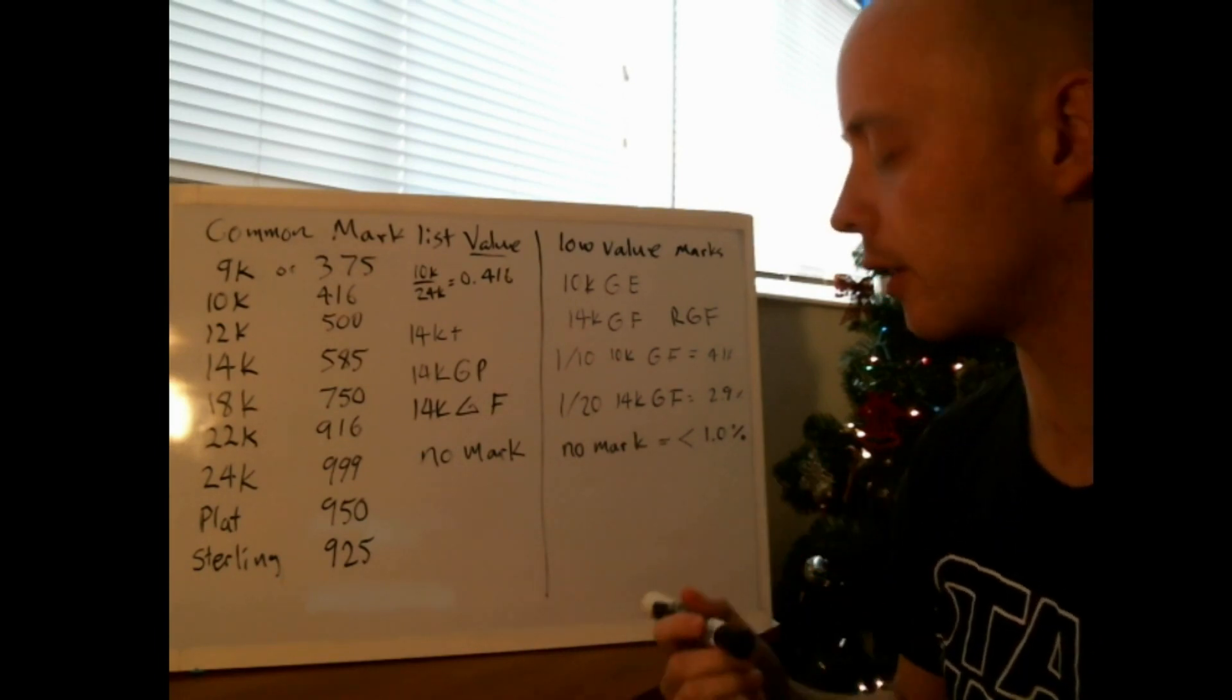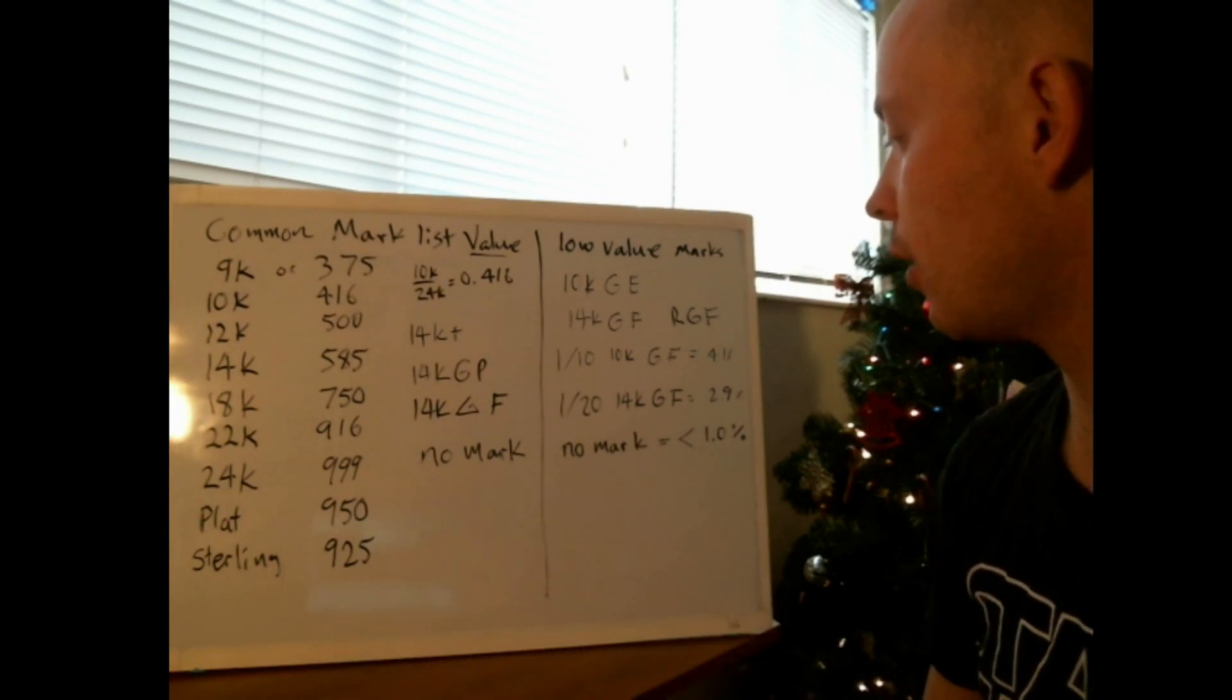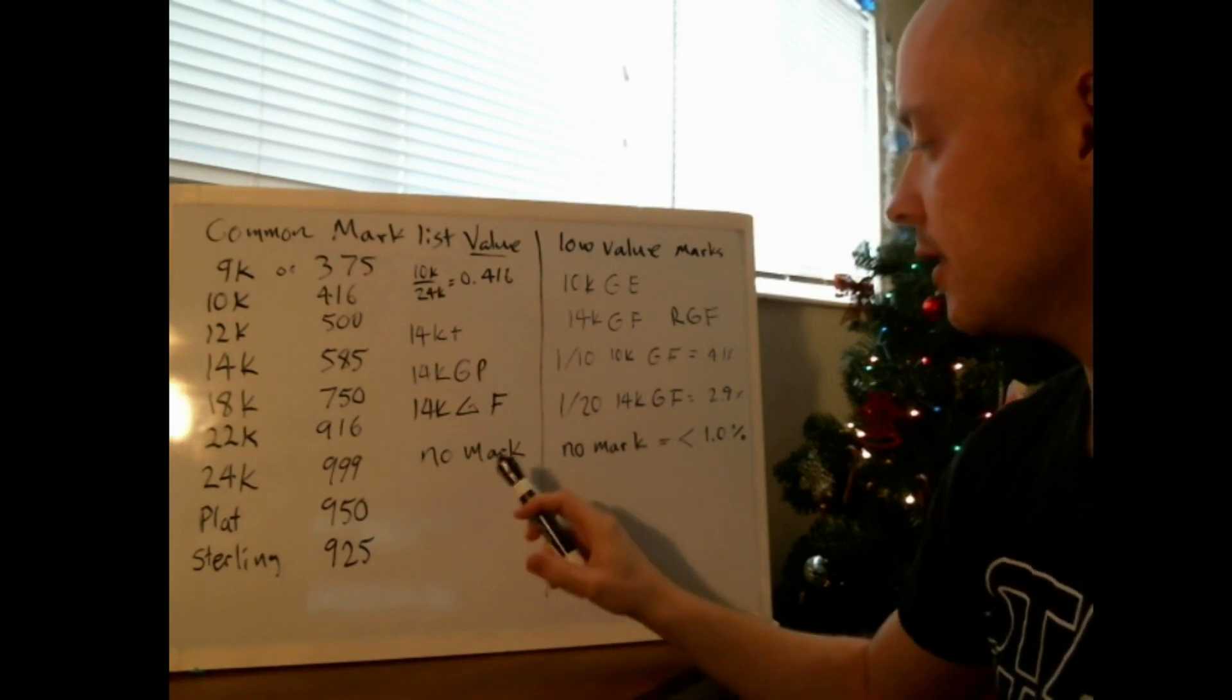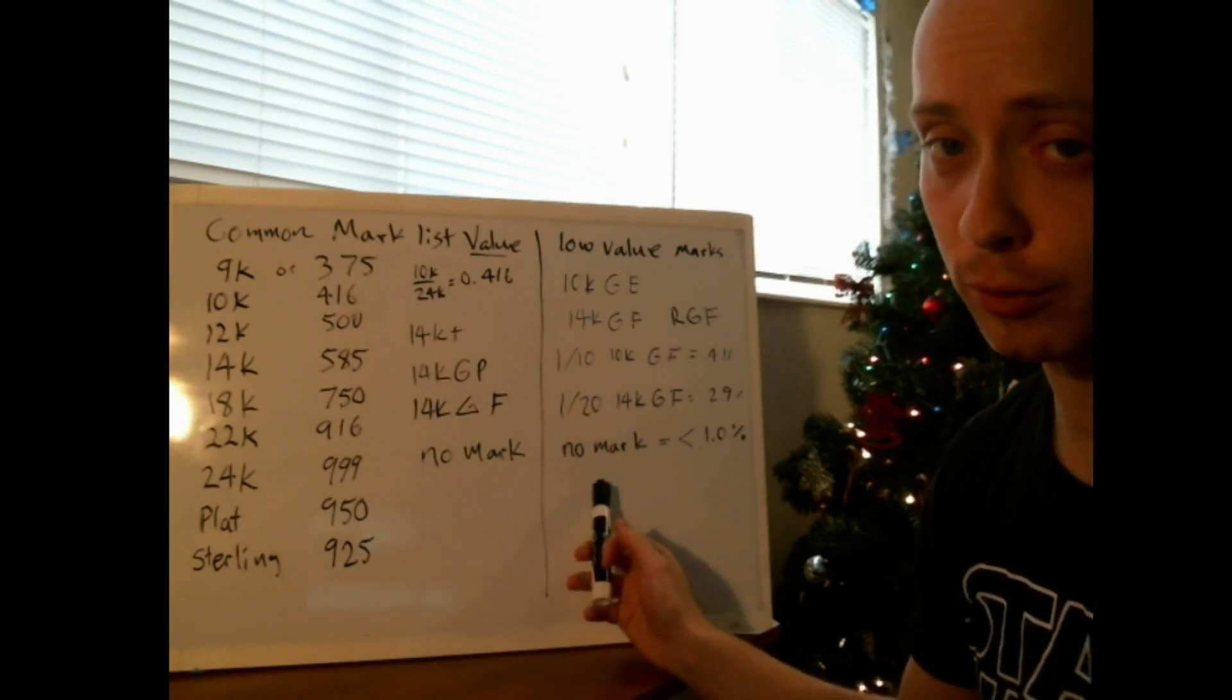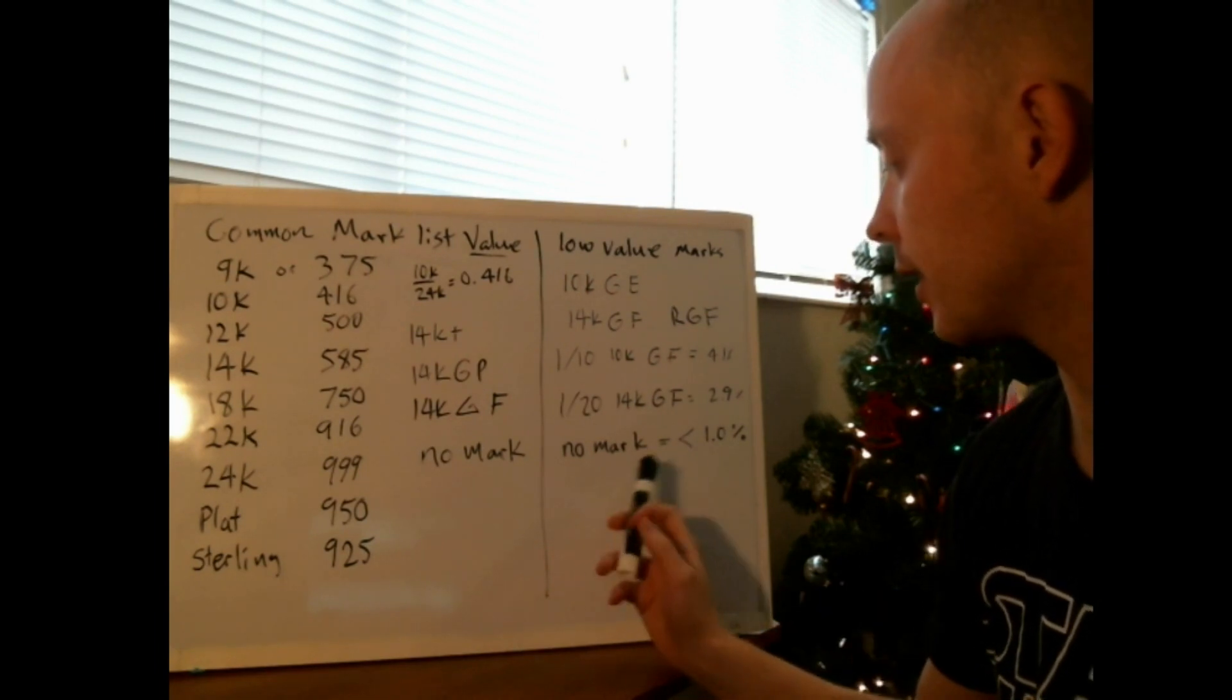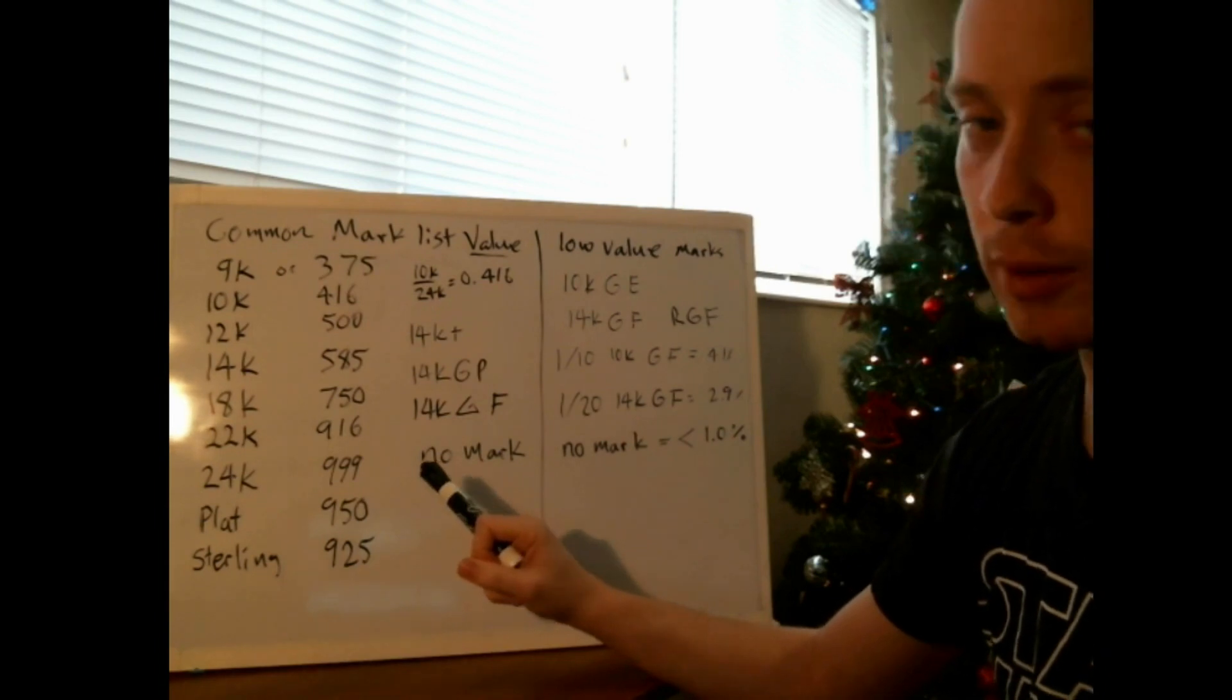The hardest thing that you'll encounter is no mark. When you find something with no mark, it could be gold or it could be not gold, or plated gold less than a percent, sometimes half a percent or a quarter of a percent, not very much based on weight. In this case, usually you'll end up doing other tests.